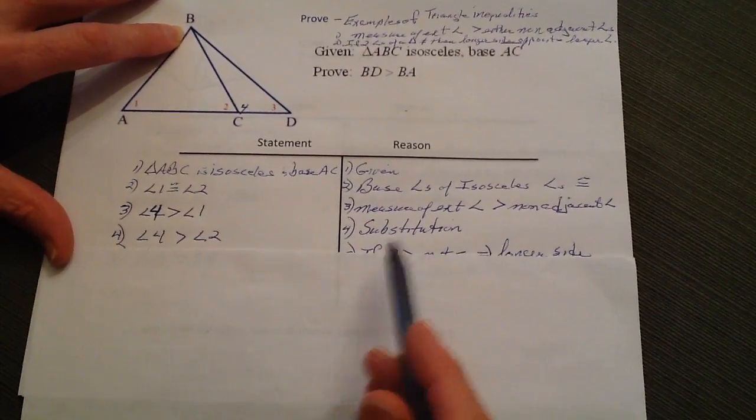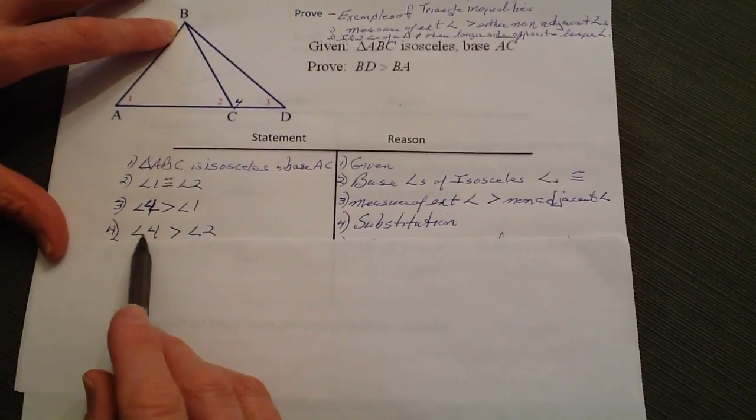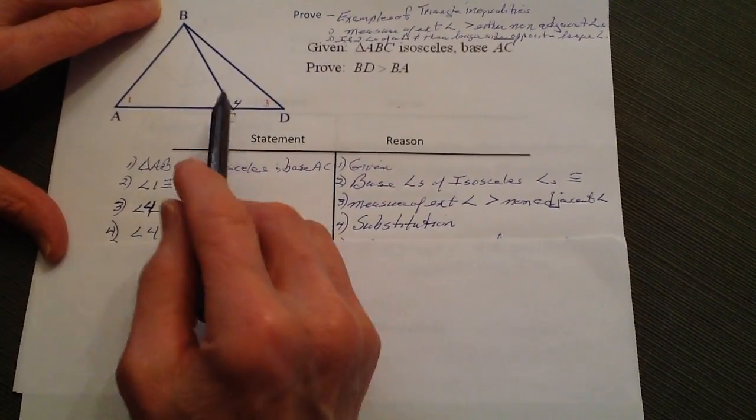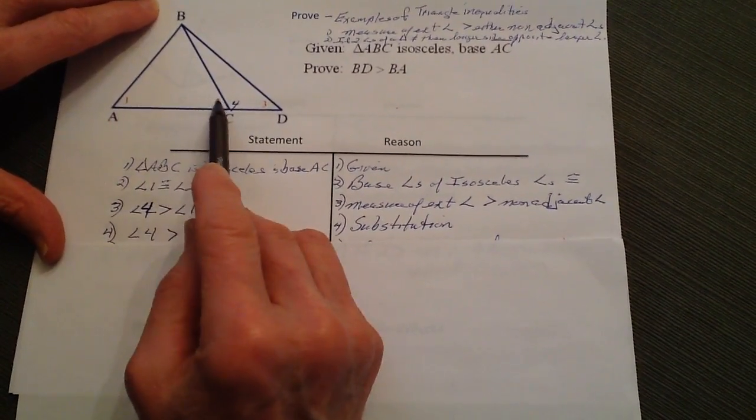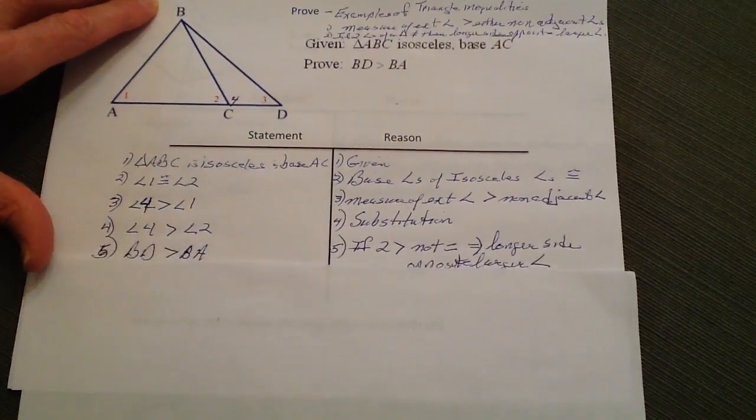Now by substitution, I can go ahead and say that angle four is greater than angle two, because I substitute the one and two since they're equal. That's something we can do.